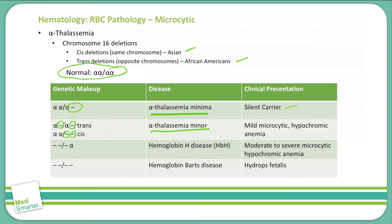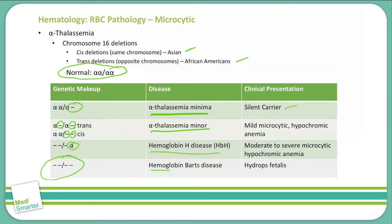When three chains are deleted and you are left with only one alpha chain, that is HbH disease, or hemoglobin H disease, which gives you a moderate to severe microcytic hypochromic anemia. When all alpha chains are deleted, that is hemoglobin Barts disease, which is not compatible with life, causing hydrops fetalis.